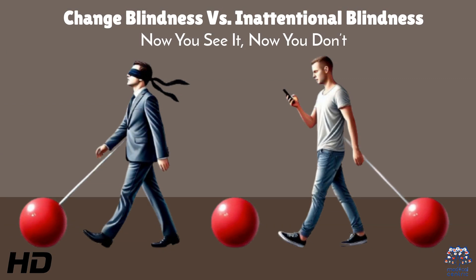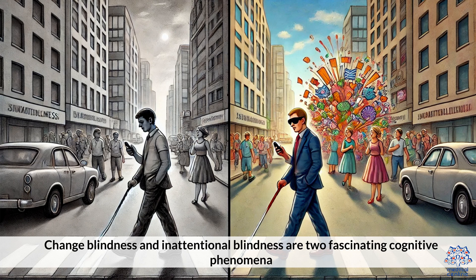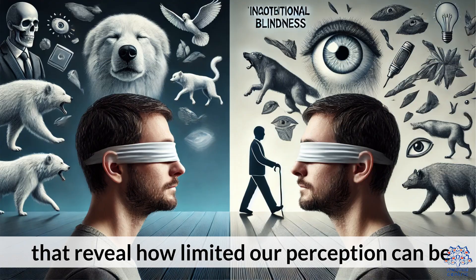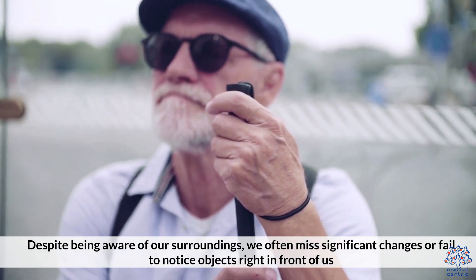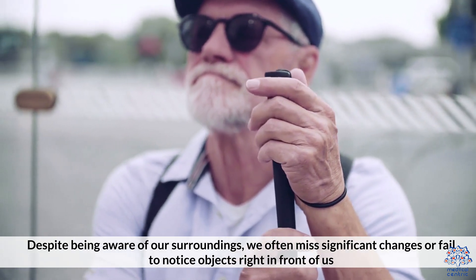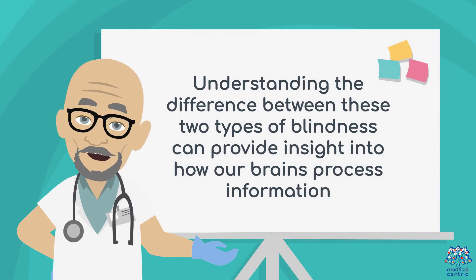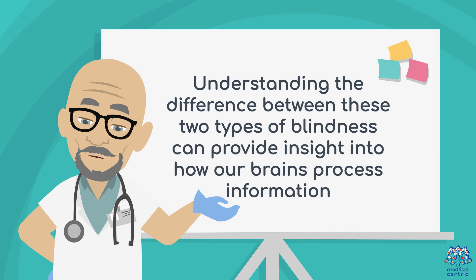Today's medical-centric topic is Change Blindness vs. Inattentional Blindness. Now you see it. Now you don't. Change blindness and inattentional blindness are two fascinating cognitive phenomena that reveal how limited our perception can be. Despite being aware of our surroundings, we often miss significant changes or fail to notice objects right in front of us. Understanding the difference between these two types of blindness can provide insight into how our brains process information.